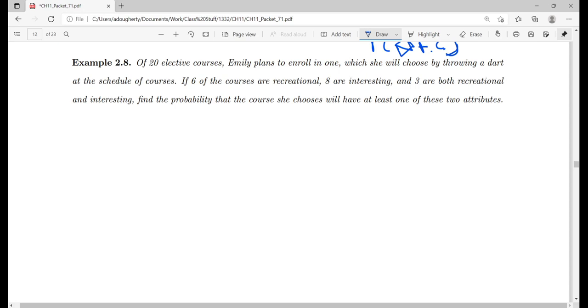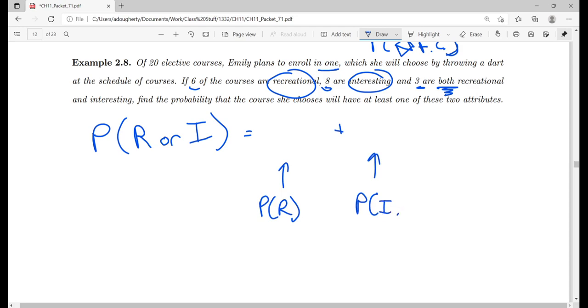Of 20 elective courses, Emily plans to enroll in one, which she will choose by throwing a dart at the schedule of courses. So six courses are recreational, eight courses are interesting, three are both. Find the probability she chooses a course that has at least one of the two attributes. So we're saying, what's the probability that her course is recreational or interesting?